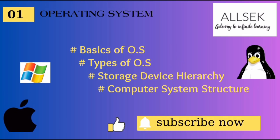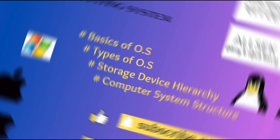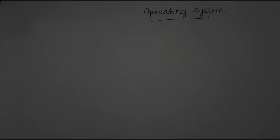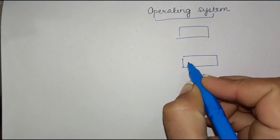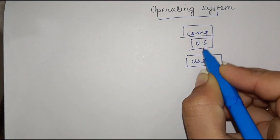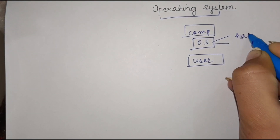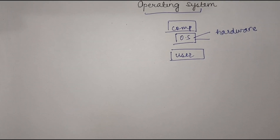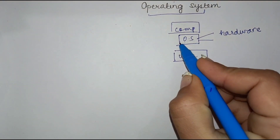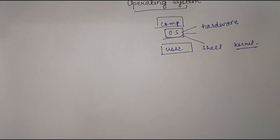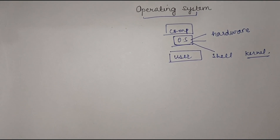Welcome to this video about operating systems. There is a computer and there is a user, and the operating system is an intermediary between the user and the computer. The operating system has control over all the hardware to perform the basic functions needed for the computer to run. The operating system has two parts: one is the shell and the other is the kernel. The kernel is software that runs every time the computer is on.